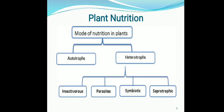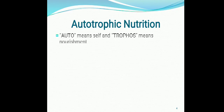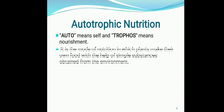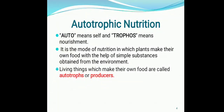We are going to understand what is autotrophic mode of nutrition. Auto means self and trophus means nourishment. It is the mode of nutrition in which plants make their own food with the help of simple substances obtained from the environment. Those organisms which make their own food are called producers or autotrophs — for example, green plants.